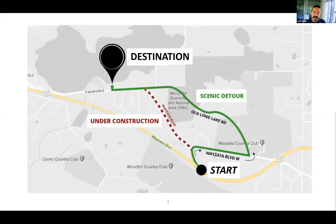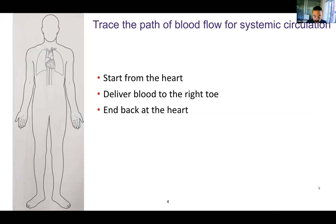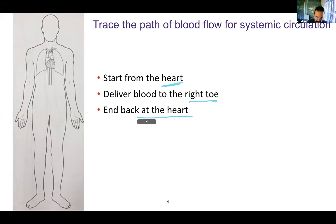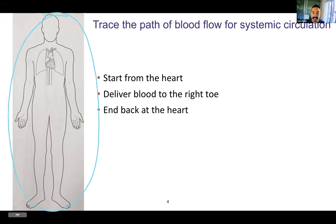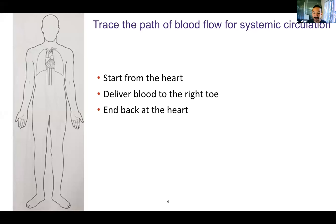Collateral circulation is really important, not just to deliver as much blood as possible to a given organ, but also to have an alternate route in case one area gets blocked off, whether it's a blood clot or something else. We're not going to go over this activity right now, but I want to introduce it to assess your baseline understanding of the circulatory system. Can you trace the path of blood flow starting from the heart, deliver it to the right toe, and back to the heart? We'll go over this at the end of this series of notes.